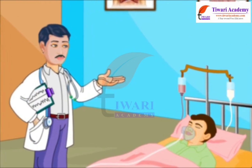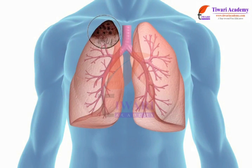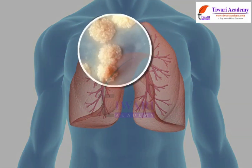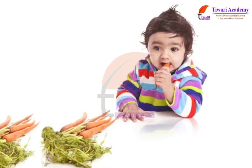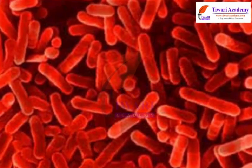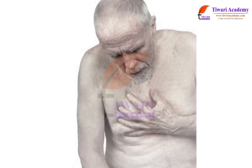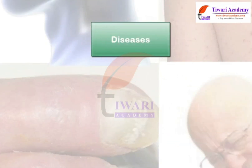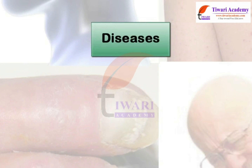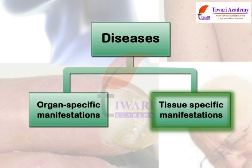The severity of disease manifestations depends on the number of microbes in the body. If the number of microbes is very small, the disease manifestations may be minor or unnoticed. But if the number of microbes is large, the disease can be severe enough to be life-threatening. Generally, diseases are of two types: organ-specific manifestations and tissue-specific manifestations.